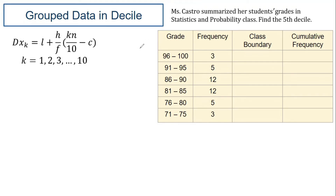If the problem is grouped data, we must complete the frequency distribution table, including the class boundary and cumulative frequency. Always identify the lower limit and upper limit of the table. We subtract 0.5 from the lower limit and add 0.5 to the upper limit to get the lower boundary and upper boundary respectively.